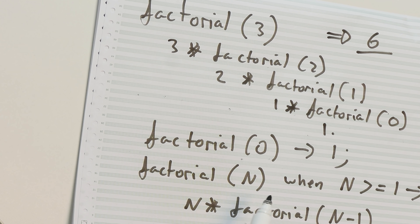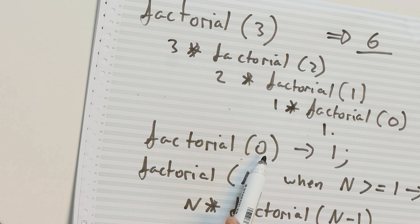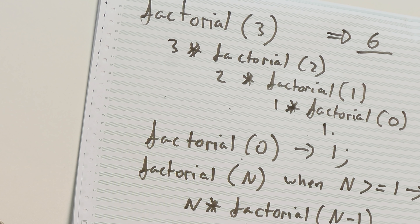There's another property here: defensive programming is not encouraged. If we call factorial of negative 1, it will fail pattern matching on the first clause since negative 1 is not equal to 0, and it won't match the second since negative 1 is not greater than or equal to 1. There are no more clauses, so the process executing this code terminates — because of a bug. You shouldn't be calling factorial with negative 1. By letting the process crash when state is corrupted, you get very compact and concise programs. You program for the positive case, and errors are handled differently.